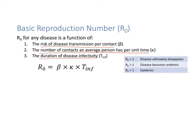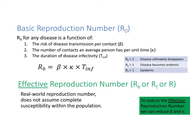The magnitude of R-naught is important: if it's less than one, the disease is going to disappear within the population; if it's equal to one, the disease becomes endemic; and if it's greater than one, it's going to be an epidemic. R-naught is a completely theoretical construct because it assumes a completely susceptible population.